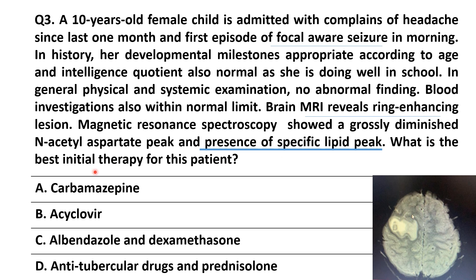So what is the best initial therapy for this patient? The first option is carbamazepine. Carbamazepine is the drug of choice for focal seizure — whenever a patient is having focal aware or complex partial seizure, focal with loss of consciousness, we start carbamazepine as first line therapy. However, we start anticonvulsants only when the patient is having two or more seizures. Here there is only the first episode of seizure.